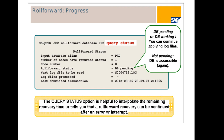You can check roll forward status using: roll forward database <db name> query status. When the status says 'DB pending' or 'DB working', you can still run the roll forward command and apply more logs. When it says 'not pending', your database is accessible — you can apply more log batches as needed.